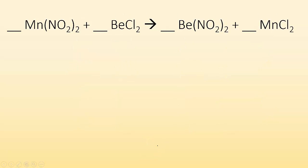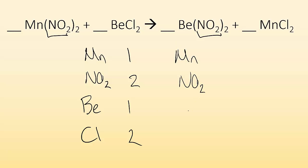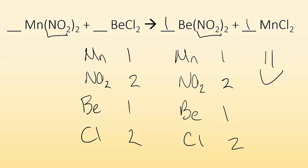Same process — create an inventory: Mn, NO2 (which I can treat as just one thing since it shows up as NO2 in the products), beryllium, and chlorine. Take the inventory: 1, 2, 1, 2. Same order for the product inventory. I've got one beryllium, two NO2s, one Mn, and two CLs. Everything is balanced — I didn't even have to do anything. The blank coefficients are all one.